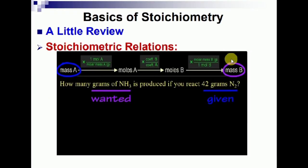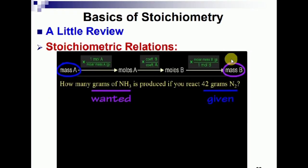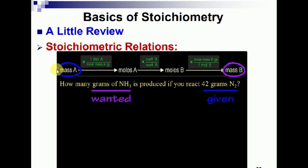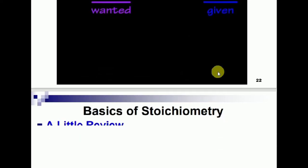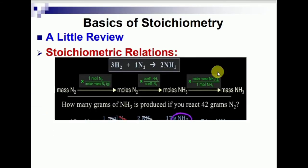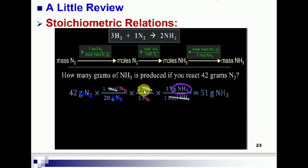In this example: how many grams of NH3 are produced if you react with 42 grams of N2? You have the given amount of 42 grams N2 and the wanted amount is NH3. You can find this wanted amount by converting mass into moles, then moles into the wanted stoichiometric amount, and then converting to mass of B. This is the mass-mass relationship.